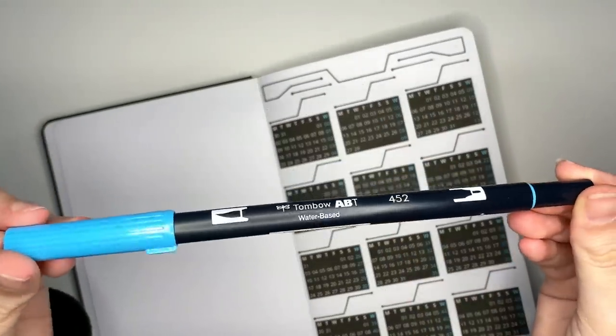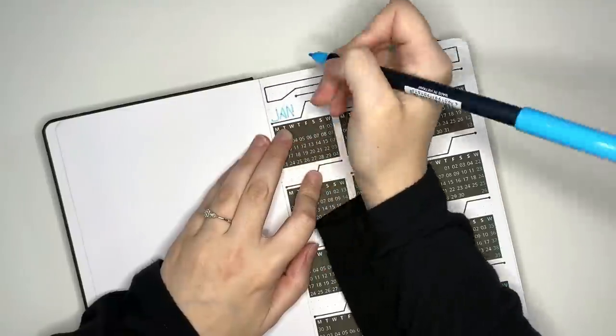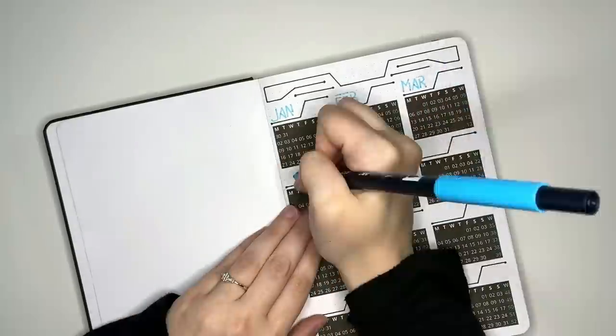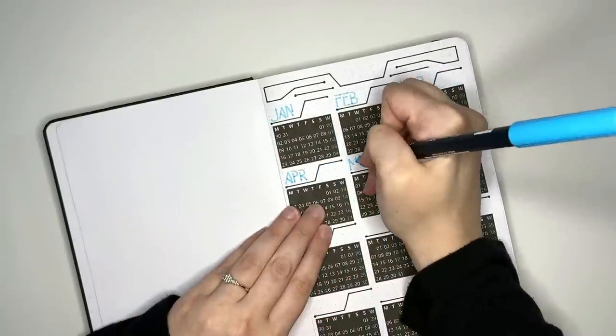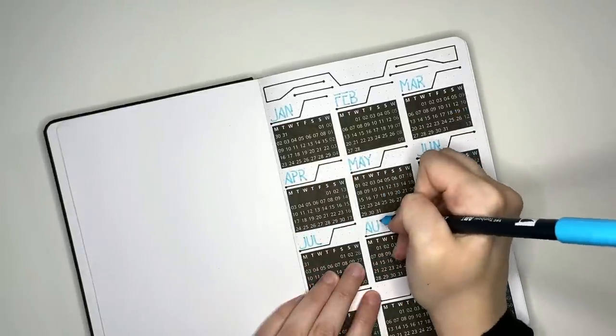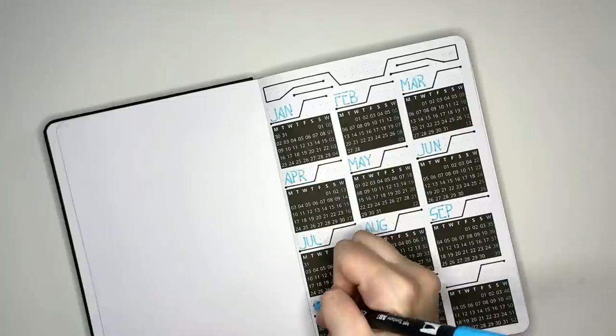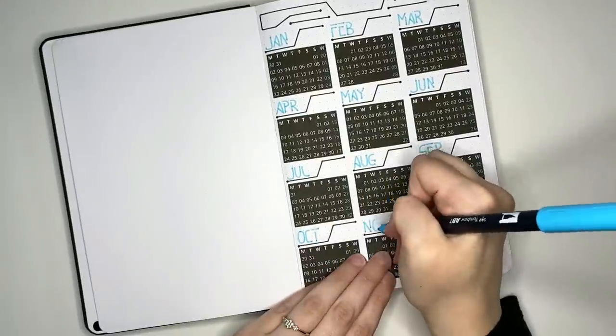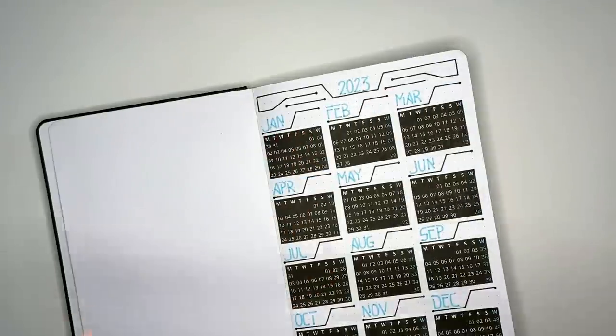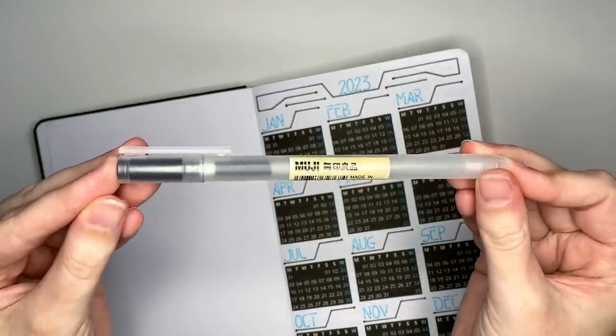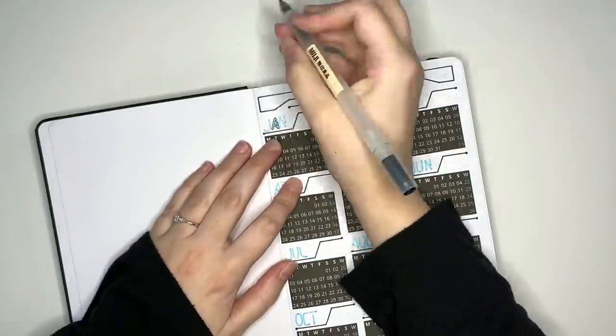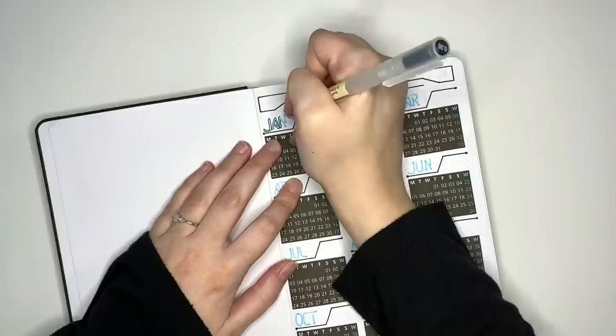For our headers, we are going in first with a Tombow Dual Brush marker, this one's in the colour 452, but as usual all of the equipment we're using is linked in the description box. The lettering style is fairly simple, really just a variation of a simple all-cap style. Some of the letters have small breaks in them, for instance the F, E and B for February, whereas other letters like the S for September and the A are a little bit different. To give those letters a little bit more definition, I do outline them with my Muji gel pen in the 0.38 size.